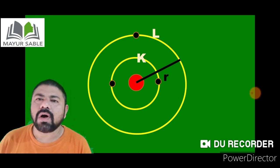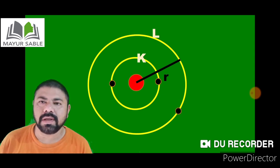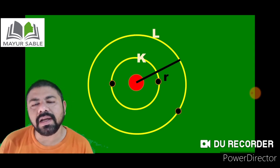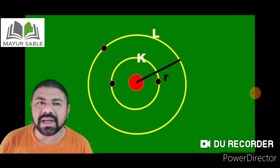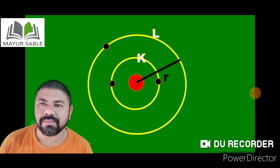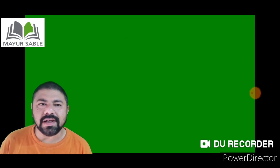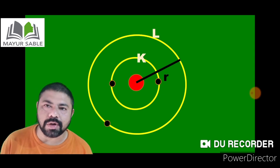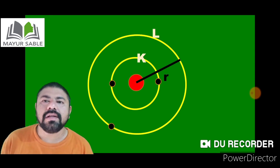In ninth class you studied that volume or size is a fundamental property of matter. Every matter is made up of atoms, therefore the size of an atom is indicated by its radius. The atomic radius is the distance between the nucleus of an atom and its outermost shell. Here in this diagram you can see how we determine the atomic radii of an atom.